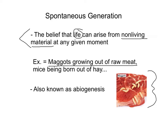It sounds ridiculous now, but the belief that if you put raw meat outside, maggots would come from it — if enough people leave meat around and a day or two later there's maggots crawling around it, it's not so far-fetched to have people think maggots just came out of the meat. That's where maggots come from and that's where flies come from. We now know that's not true.